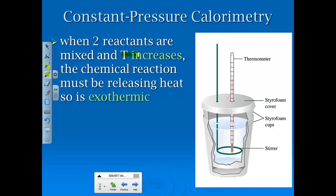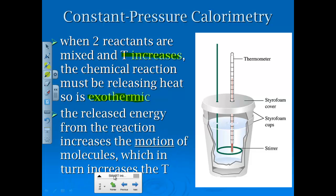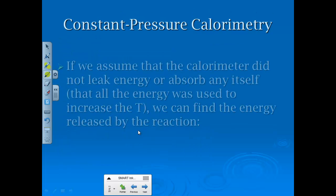When two reactions are mixed and the temperature increases, the chemical reaction must be releasing. So it is going to be an exothermic reaction. Obviously, the opposite would be the case for endothermic. But if it's exothermic, the released energy from the reaction increases the motion of molecules, which is going to also result in having a higher temperature, because kinetic energy and temperature and motion are all directly related.